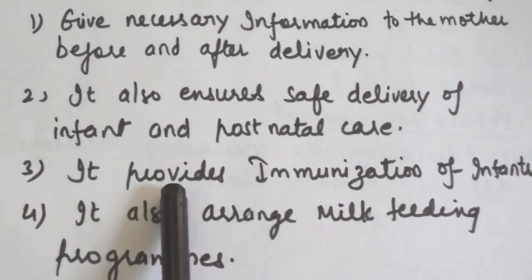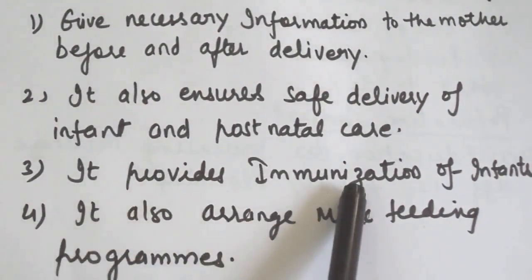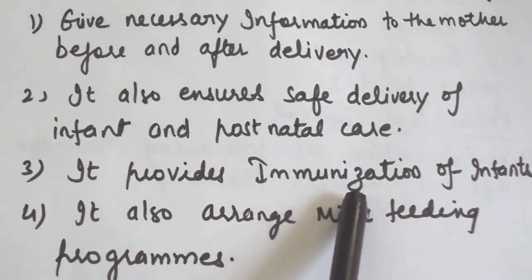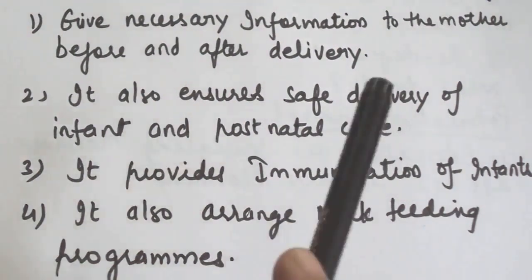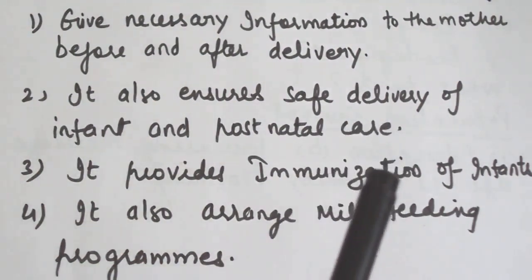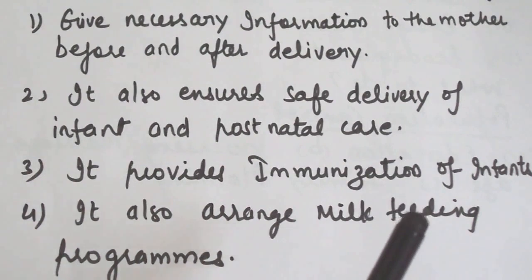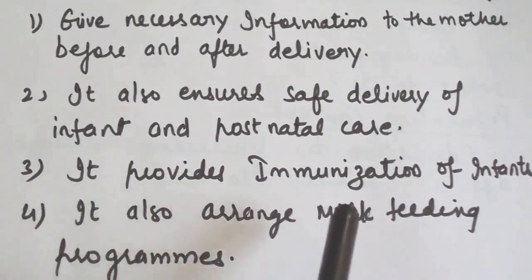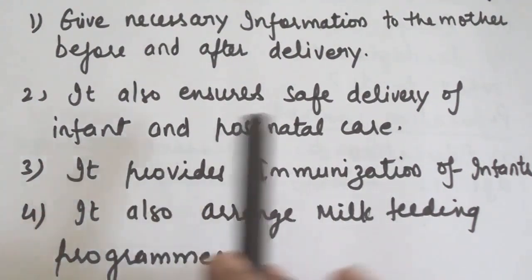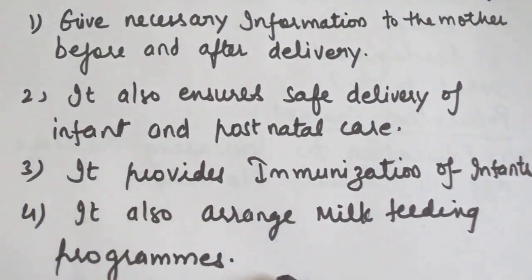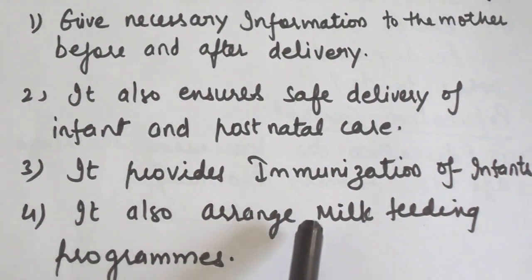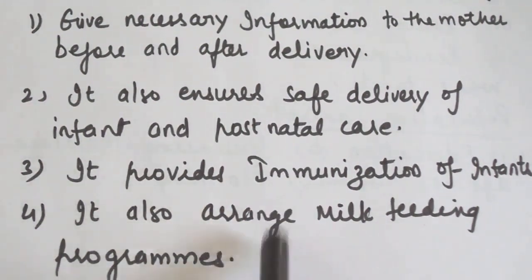The health center may also provide immunization of infants and prophylaxis against anemia and vitamin deficiencies. In May 1974, WHO launched a universal immunization program to immunize the children of the entire world against six communicable diseases: diphtheria, pertussis, tetanus, polio, tuberculosis and measles.